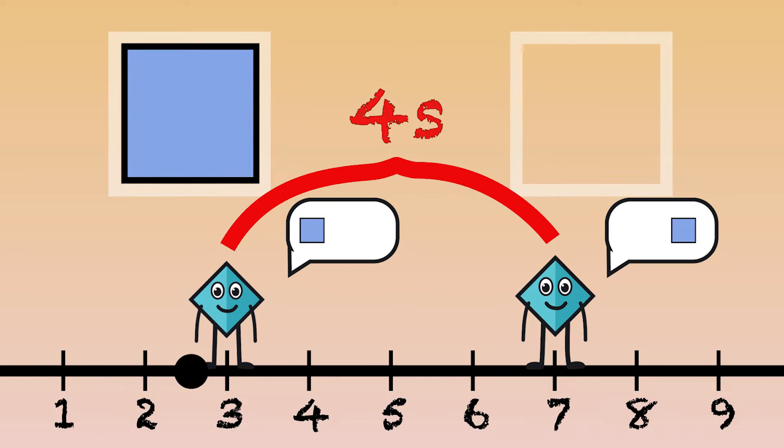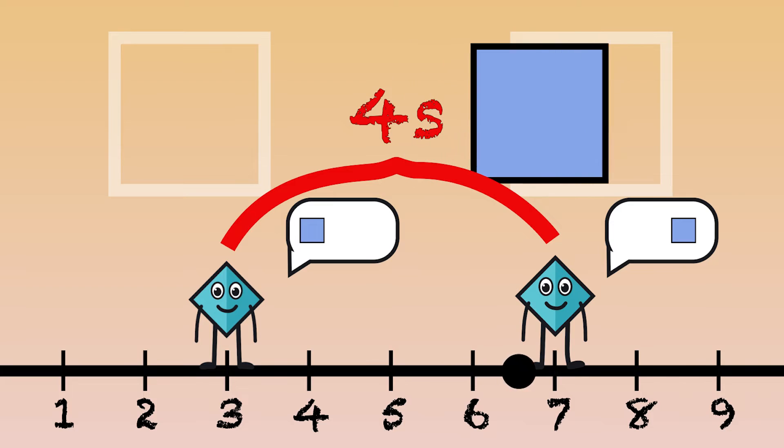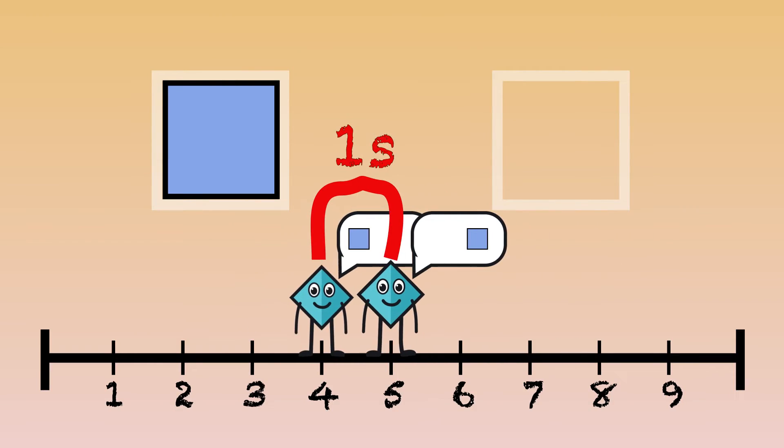Keyframes are also important for timing. The length of time between two keyframes decides how fast or slow something changes. For example, if we set the keyframes one second apart, it will take one second for the square to move. If we set them five seconds apart, it will take five seconds for the square to move.